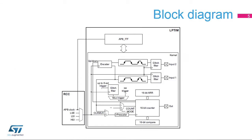The low-power timer is a peripheral with two clock domains. The APB clock domain contains the peripheral's APB interface. The kernel clock domain can be clocked by the APB clock source or by other internal clock sources including LSE, LSI, and HSI. It can also be clocked from an external clock source through the timer's Input-1 input.